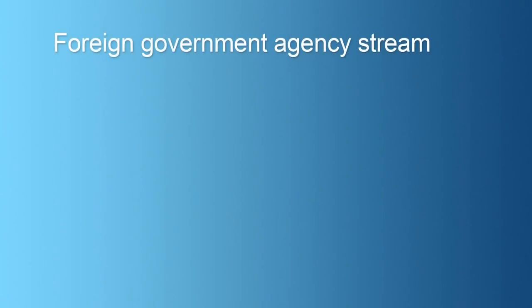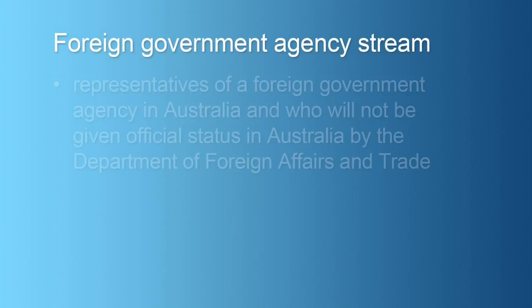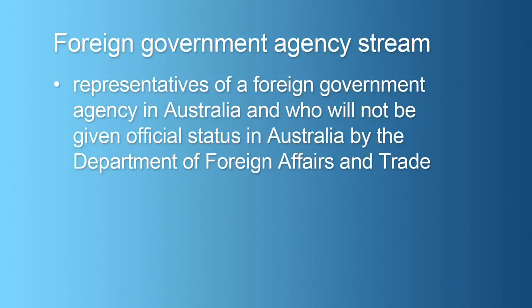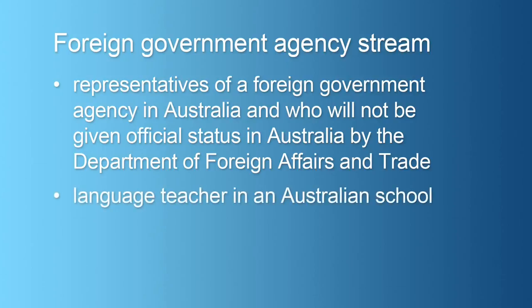The first stream, the foreign government agency stream, allows applicants intending to be employed as representatives of a foreign government agency in Australia and who will not be given official status in Australia by the Department of Foreign Affairs and Trade, or by their government as a language teacher in an Australian school.